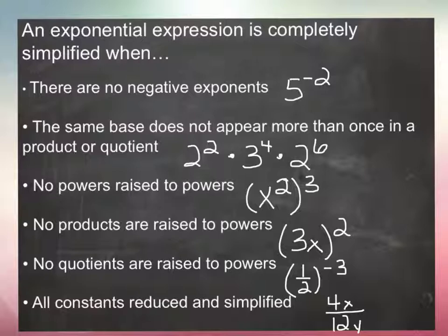There cannot be any negative exponents. So if you had like 5 to the negative 2 power, it's negative, you need to make it positive exponent. Remember you have to make it happy.